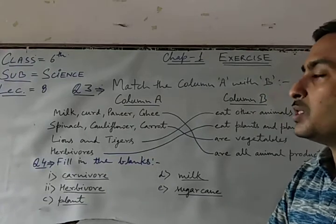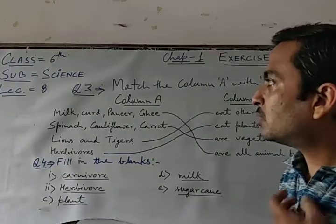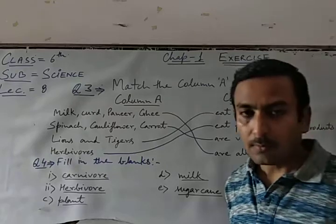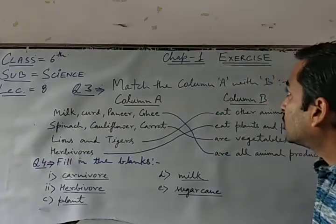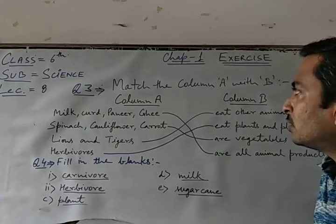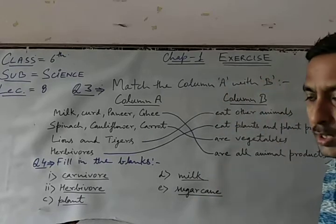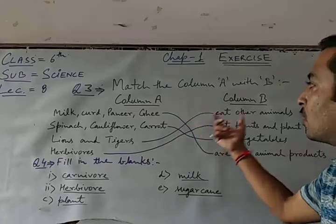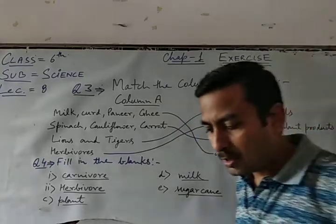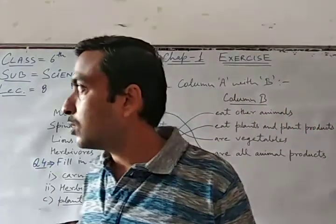Now we will start with the next question, question 3. Question 3 students, match the column A with B. Column A and column B, which we have given the sentence, which we have to match.